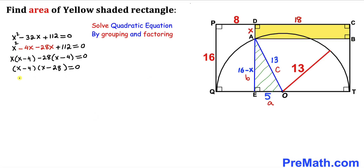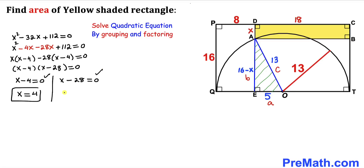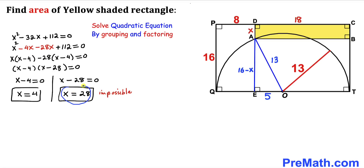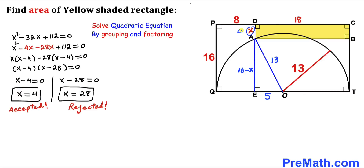Separating the two factors: x − 4 = 0 or x − 28 = 0. The first equation gives x = 4 and the second gives x = 28. We can see that x = 28 is unrealistic and not possible, so we reject x = 28 and accept x = 4. Therefore our side length AD turns out to be 4 units.